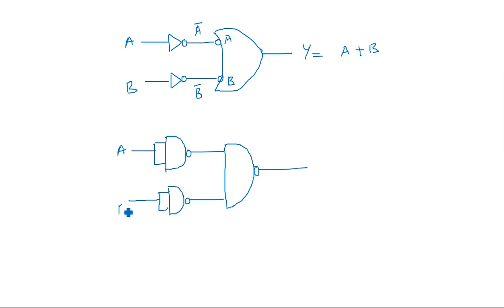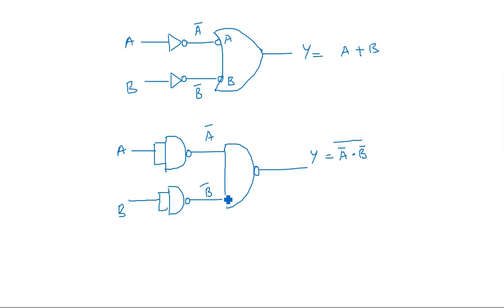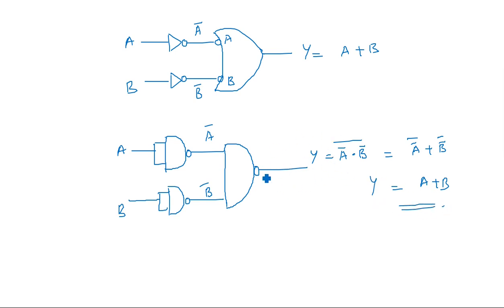With A and B as inputs to the NAND gate: A-bar and B-bar are the inputs internally, so the output is (A-bar · B-bar)-bar, which by De Morgan's law equals A + B. This confirms OR operation is achieved using NAND gates only.